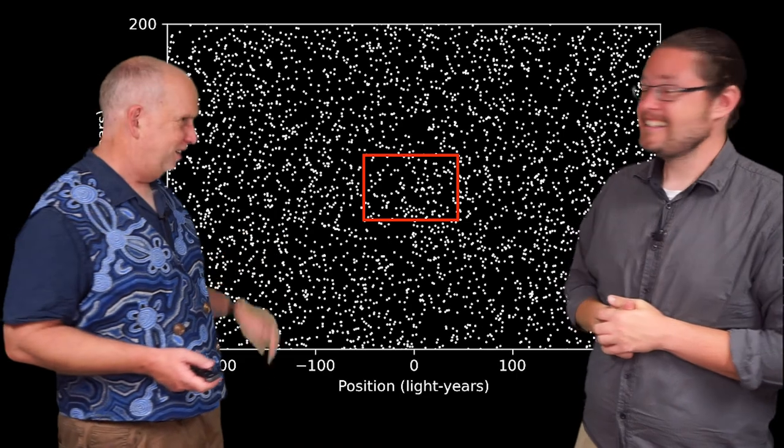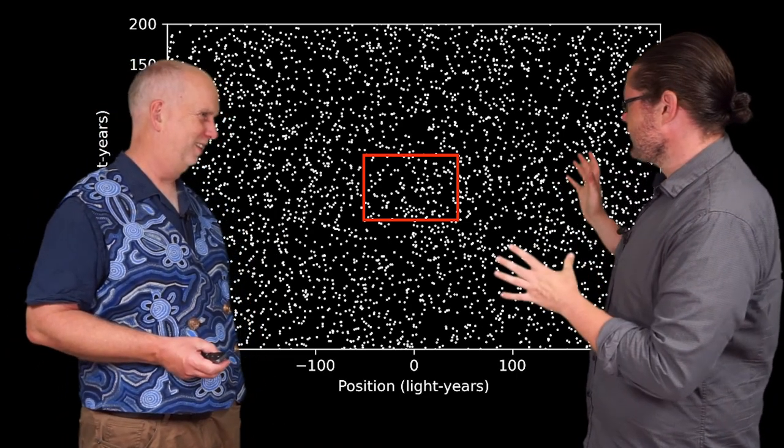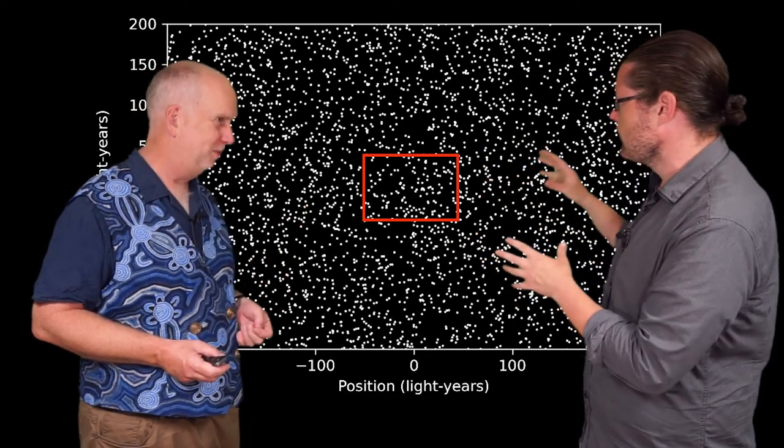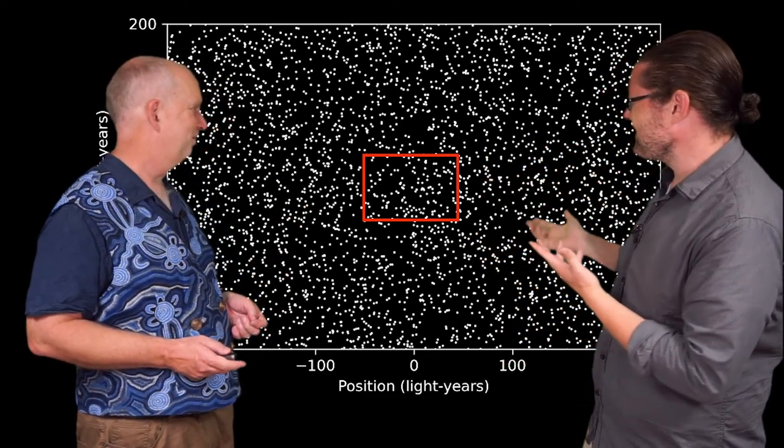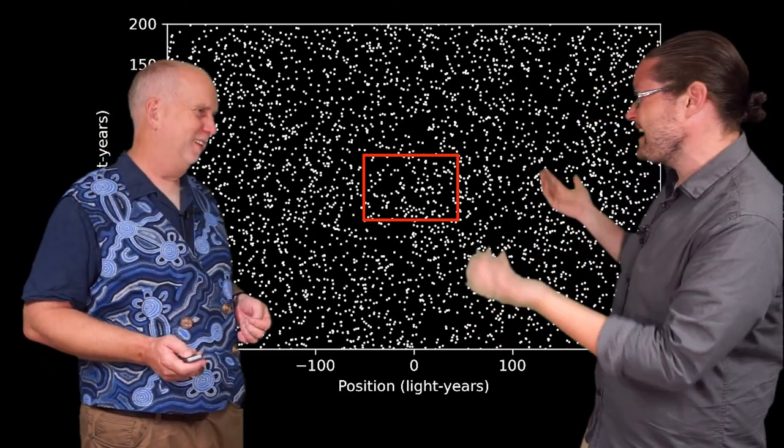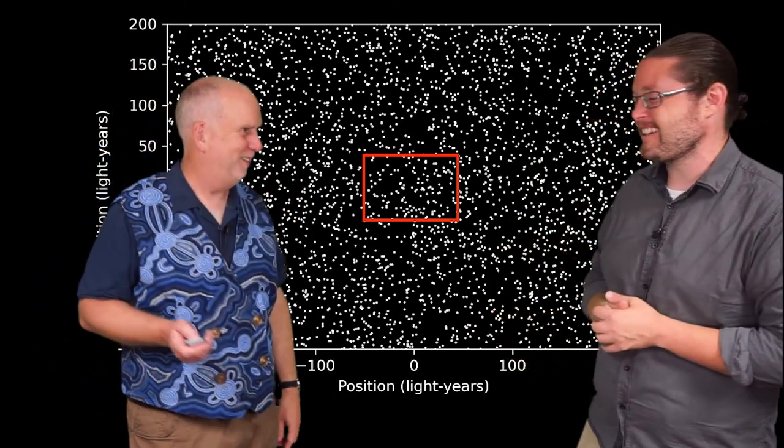But let's zoom out now to 200 light-years. I mean it's a lot denser, and so in this red square here that is the previous. That was our previous one. Not really? Yeah, it's all over the place. I mean again there's more, but yeah, that's true you're looking at a bigger volume. Yeah, exactly.